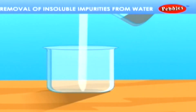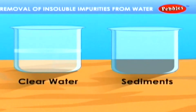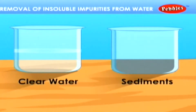The clear water can be seen at the top. The sediments can be removed from the water by gradually pouring the clear water into another container without disturbing the sediments at the bottom.